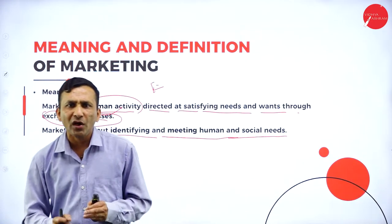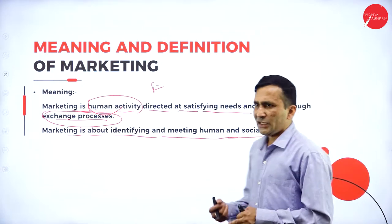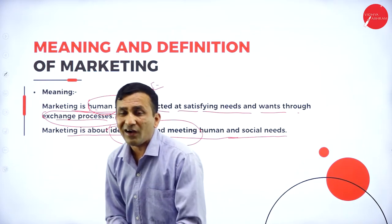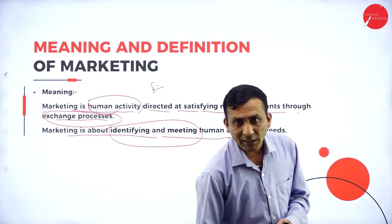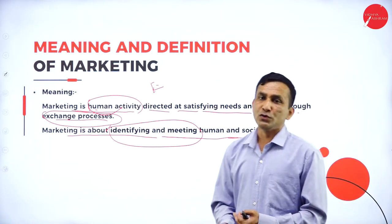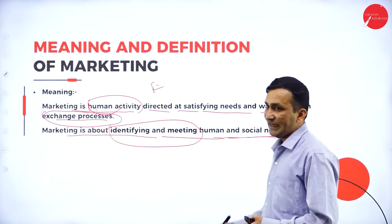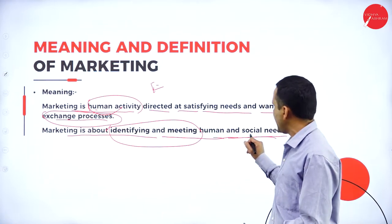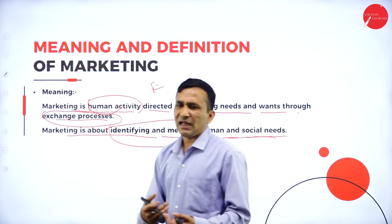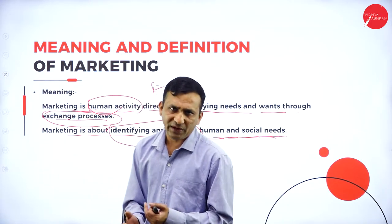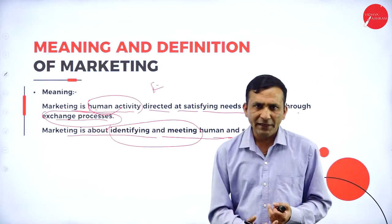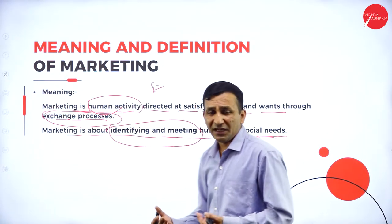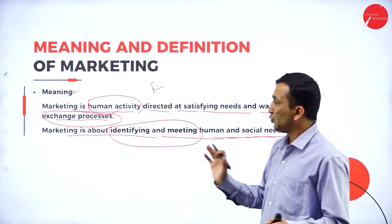Marketing is about identifying and meeting human and social needs. As a marketer focusing on modern marketing, you need to identify and meet human requirements — when they want a product, what kind of product or service they are expecting. You have to fulfill human and social needs. Since you started a business, you are serving for society. Human needs vary from basic needs to extraordinary needs, person to person, based on income level, customs, and traditions.